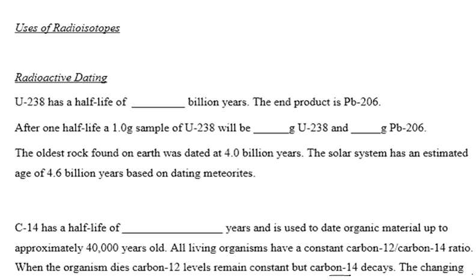The first use, which you probably are familiar with, is radioactive dating. U-238 has a half-life of 4.5 billion years — an enormously large amount of time. The end product is lead-206. This is a classic Regents question where they ask you what uranium-238 eventually decays into.